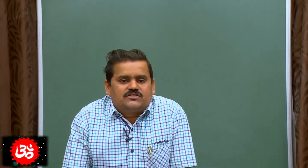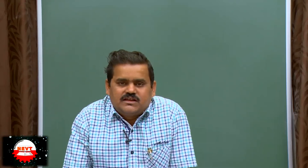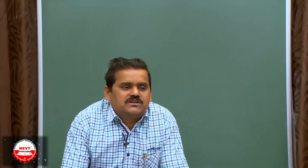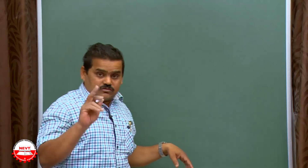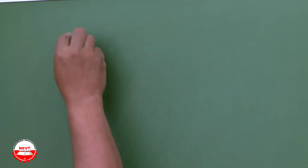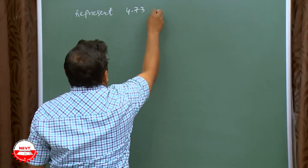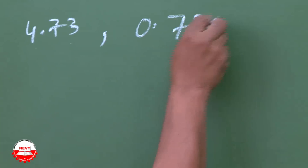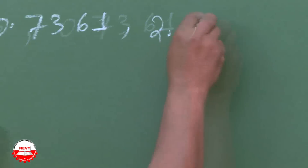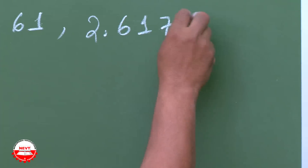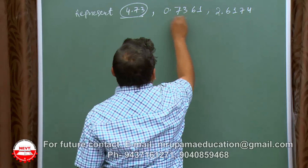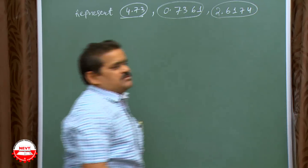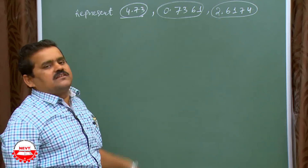We will discuss how to represent decimal numbers in successive magnification. After that, we will discuss how to represent irrational numbers on a graph, and then we will discuss finding 5 rational numbers and 5 irrational numbers between any 2 numbers. One question will come like this, so we will discuss one by one.